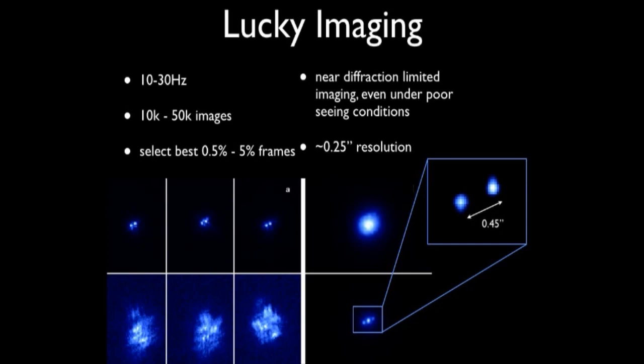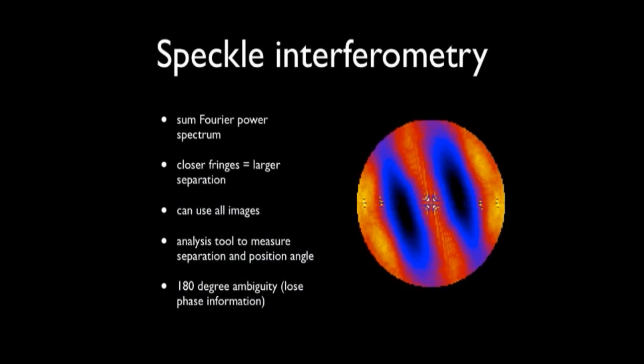This image here kind of illustrates that. If you just take all of the images and add them up, essentially a long exposure image, you'd see something like that. Now if you select just the best ones, these are the best frames out of that data cube. If you just stack the best ones, you can see something like this. There's a tripling artifact here that I can talk about later. And the worst speckle images look like that.